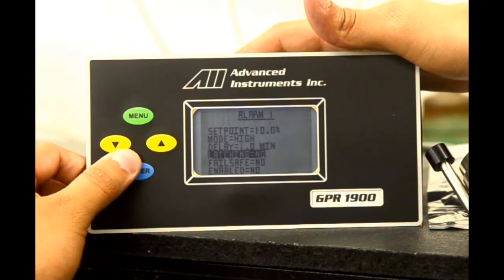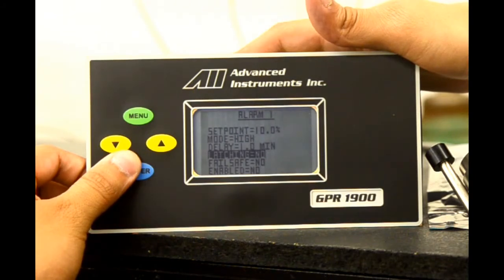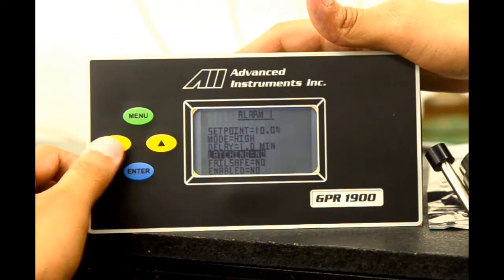We have a latching option, which is currently set as no. Again, enter to enable it. Latching allows the alarms to be in a latching mode where once an alarm set point has been reached, a user will have to physically come to the unit to release the analyzer from its energized position.